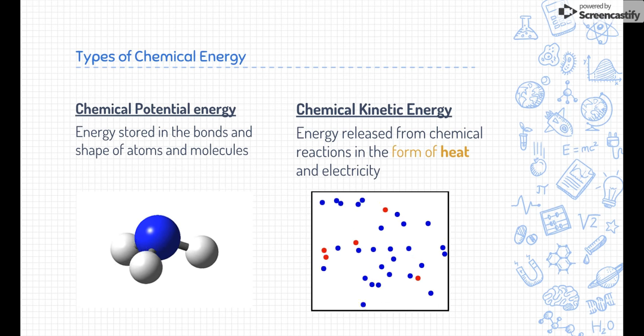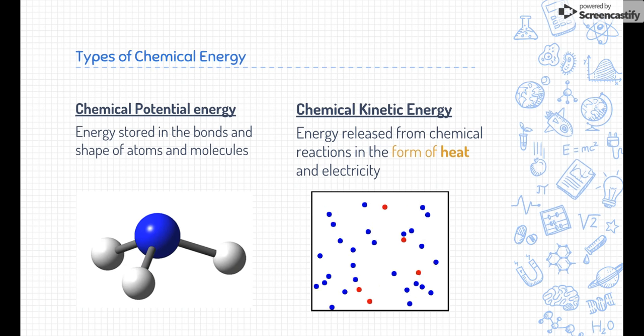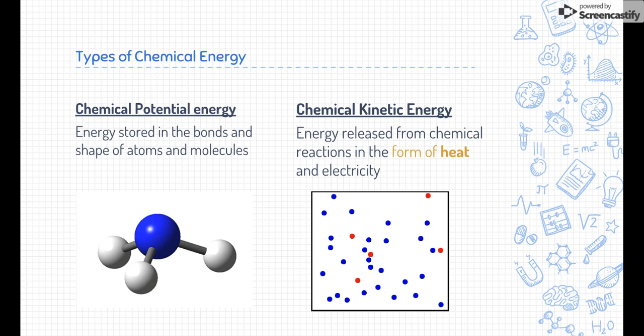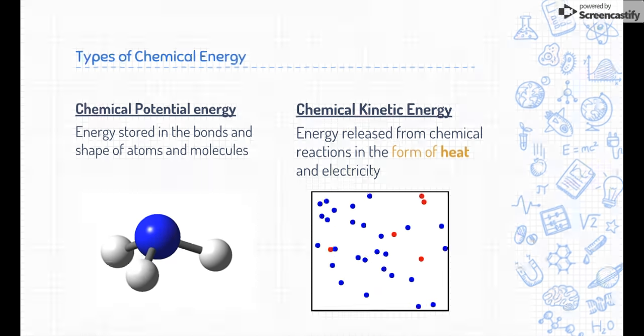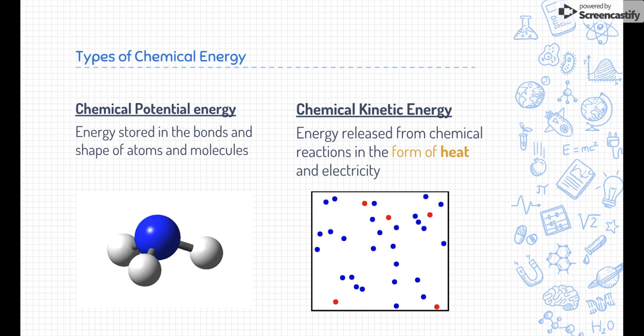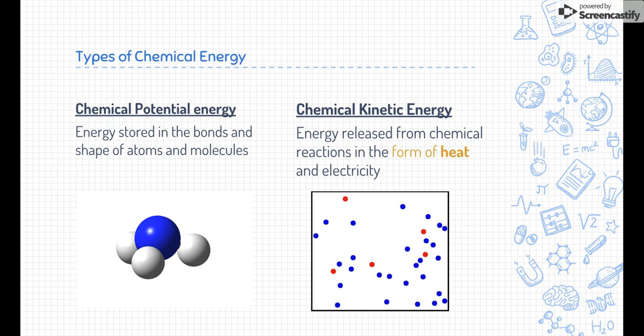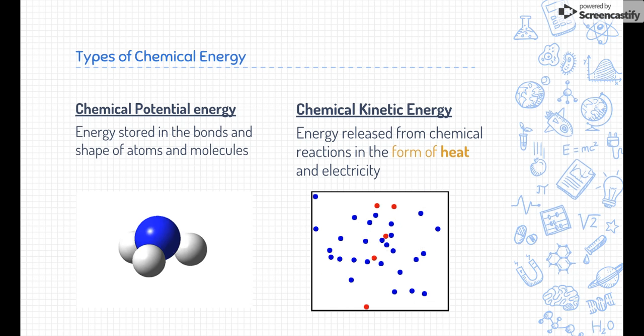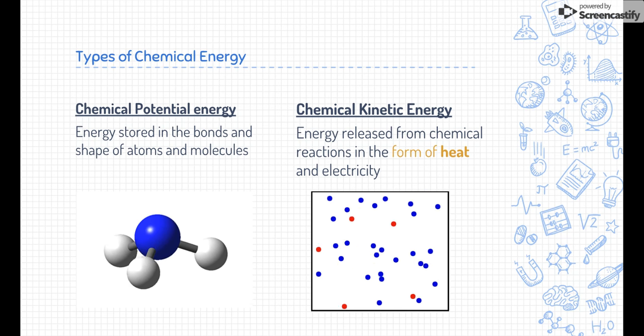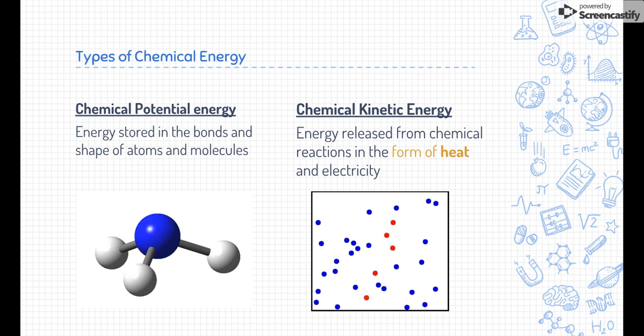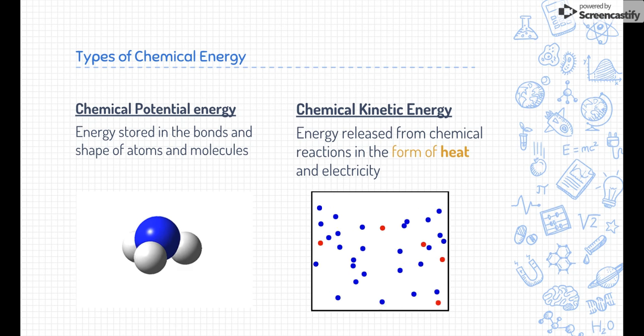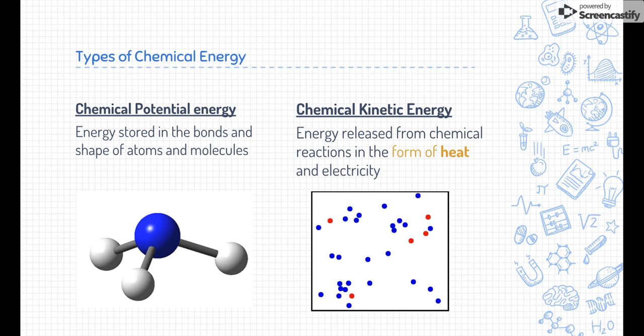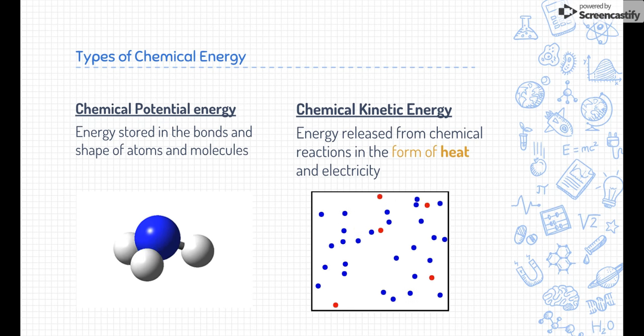There are two types of chemical energy that we want to know about. There's chemical potential energy and chemical kinetic energy. Chemical potential energy is energy that is stored in the bonds and the shape of atoms and molecules. Remember, potential means stored energy. So we can have a substance that hasn't released energy yet. It's just storing it in the bonds and the molecules that are sitting there. Think of like a stick of dynamite that's just sitting there. The TNT is just holding all of that energy.